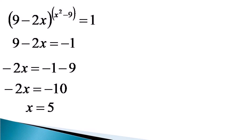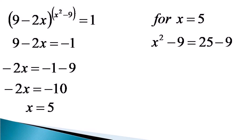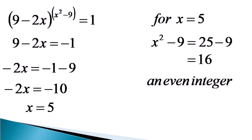Let us check whether the exponent is an even integer for x equals 5. The exponent x squared minus 9 becomes 25 minus 9, which equals 16 — and 16 is an even integer. So x equals 5 is also a solution to this equation.